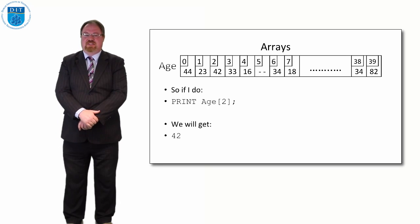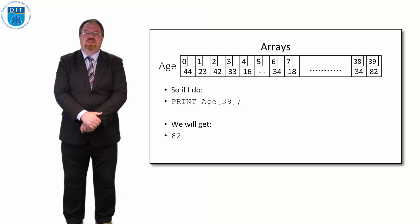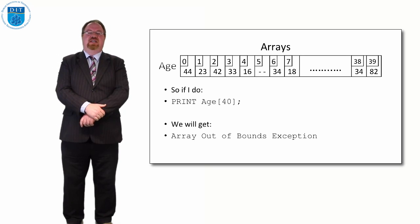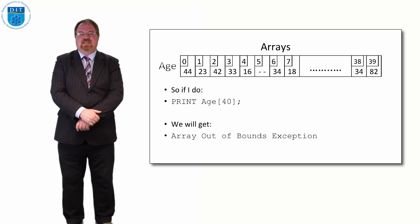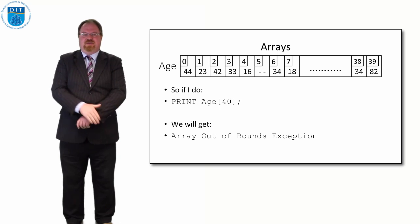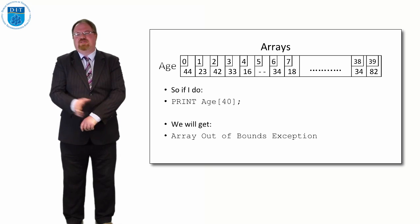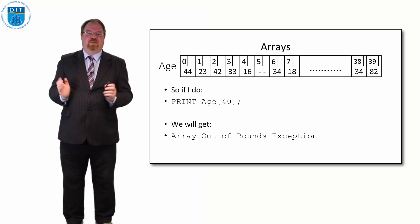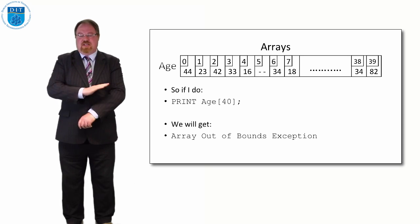Printing the last element, age[39], gives 82. If I try to print the 41st element — age[40] — I should get an error saying it's out of the bounds of the array. The bounds are 0 to 39, so accessing 40, 41, or 42 should give an error. Some programming languages are less good at checking bounds — that's how hackers break into systems — but most modern languages will ensure you only read values within the array's scope.